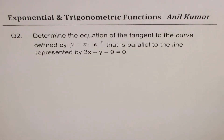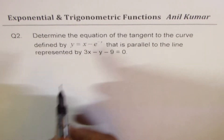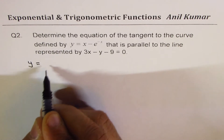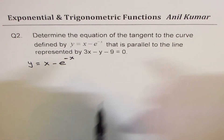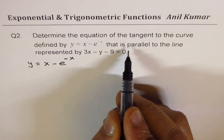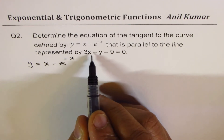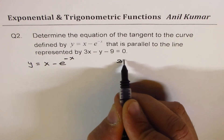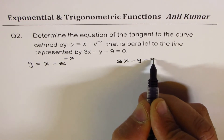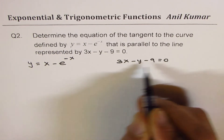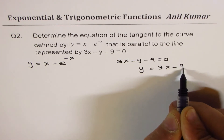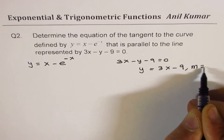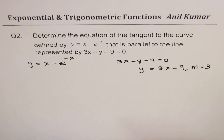Now let's look at the second question: determine the equation of the tangent to the curve y equals x minus e to the power of minus x, that is parallel to the line 3x minus y minus 9 equals 0. Rearranging, we get y equals 3x minus 9, so the slope of that line is 3. Parallel means our tangent must also have slope 3.